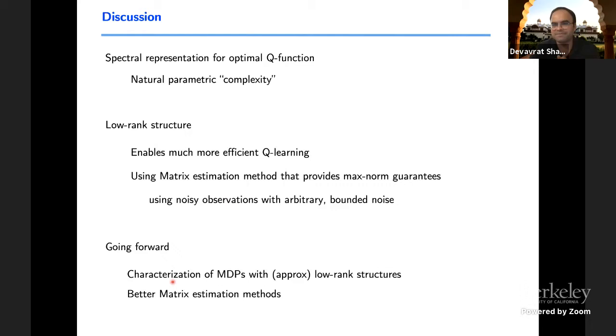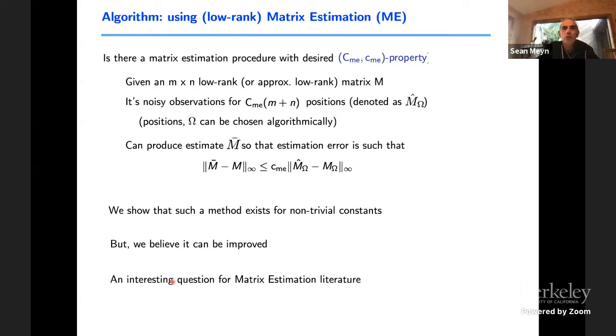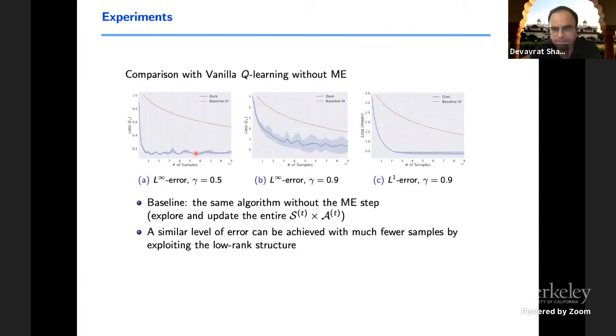The key takeaway is that spectral representation provides a nice parametric way of thinking about complexity. There's a nice connection to low rank matrix estimation with different types of guarantees. And hopefully, folks might find better ways to prove tighter guarantees there. Going forward, just characterizing MDPs that have such low rank or approximate low rank structure would be a great set of questions to look at. Let me pause here.